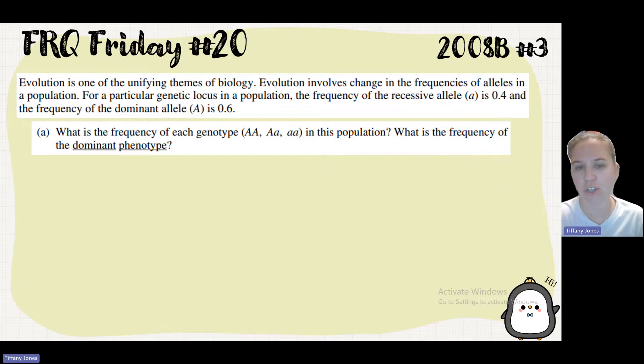AA is just your p squared. Little a, or your heterozygous, is your 2pq. And then homozygous recessive is your q squared. Because if you remember, Hardy-Weinberg equilibrium is p squared plus 2pq plus q squared equals 1.